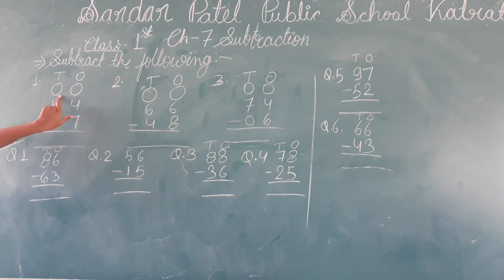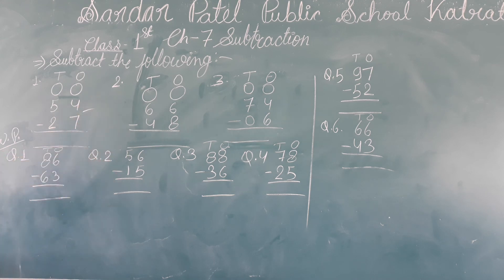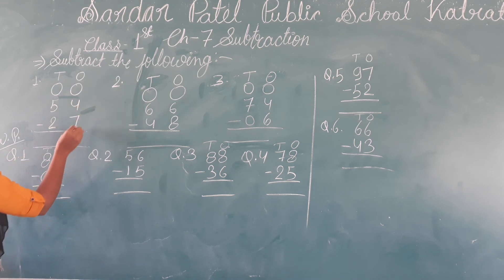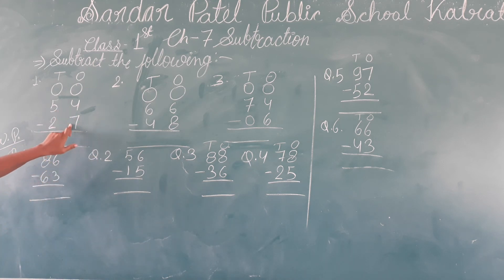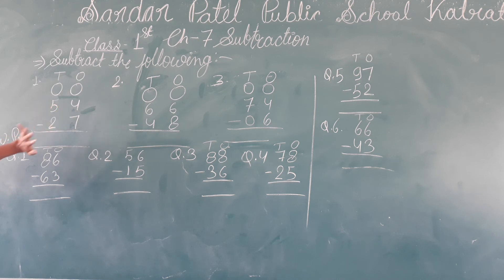You will write in your notebook. You will know what borrowing subtraction is. Like we will see the digit — the number is 54 minus 27. Here the ones place is 4 and the ones digit being subtracted is 7. Now, is 4 bigger or 7 bigger? 7 is bigger. So what do we do? We will take 1 borrowing. We will write it in a circle.